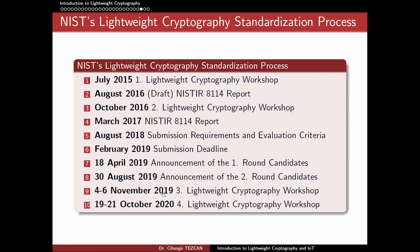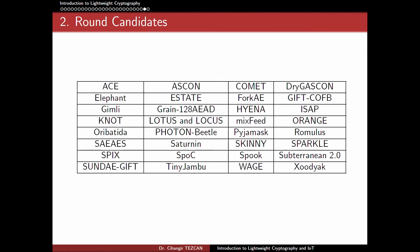On August 30, 2019, NIST announced the second-round candidates — 32 algorithms. The third Lightweight Crypto Workshop was held in November 2019, and the fourth will be held this October. However, due to the pandemic, it will be a virtual workshop. All previous workshops were held at the NIST campus in Gaithersburg, USA, but this one will be held virtually. These are the names of those 32 algorithms.